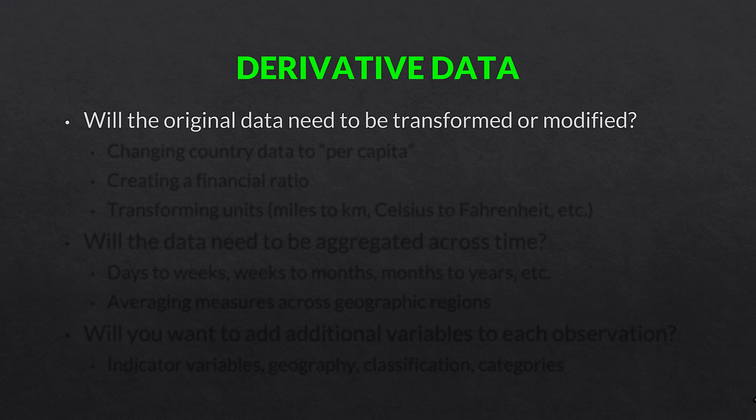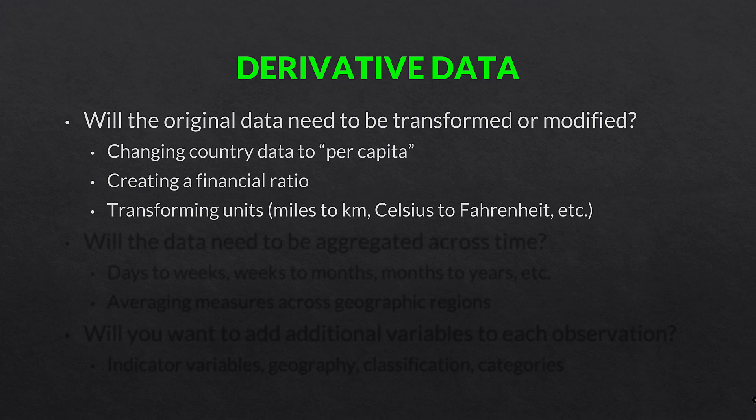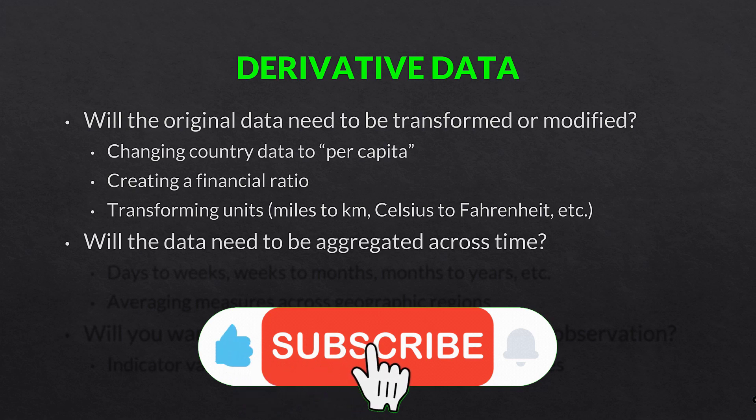Next, derivative data. Will the original data need to be transformed or modified from its original form? One common example is changing country aggregate data to per capita data, which keeps data from being misleading due to country size and allows comparison across countries by standardizing the measure. You take the aggregate measure and divide by the number of people in the country. Creating financial ratios — dividing one measure by another — is another example. Transforming units, such as miles to kilometers or Celsius to Fahrenheit, is a simple but sometimes necessary transformation.